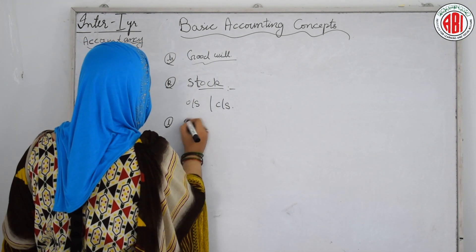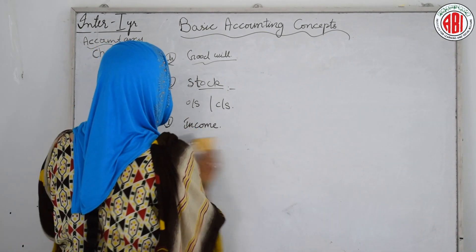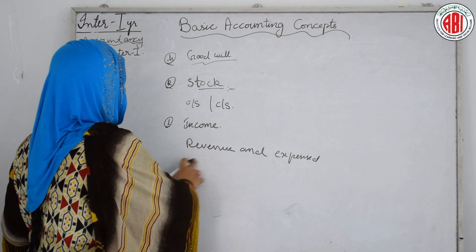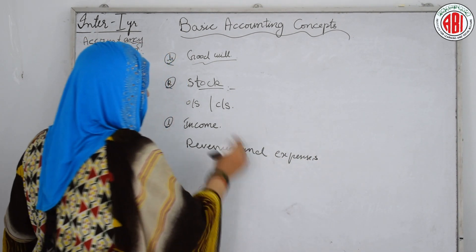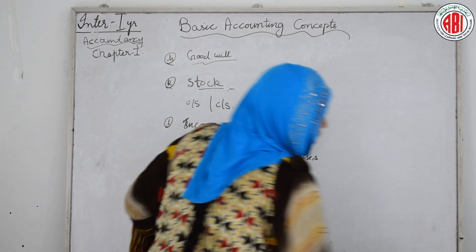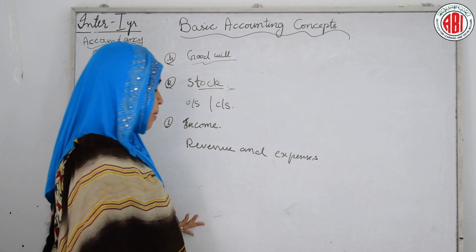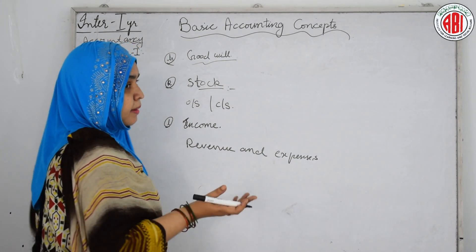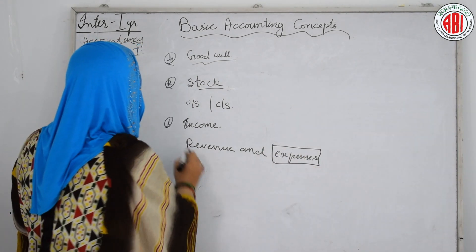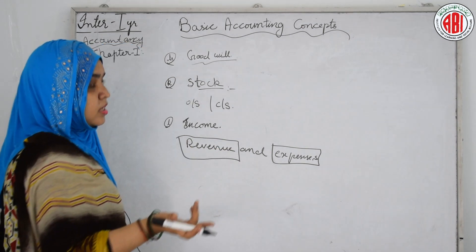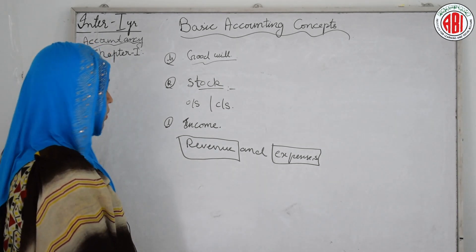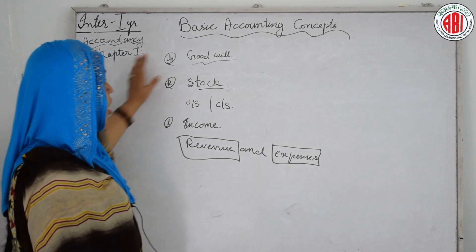Next topic is income. Income is the difference between revenue and expenses. If we sell something, we generate revenue. So all these are the basic accounting concepts.